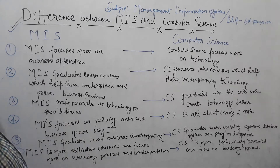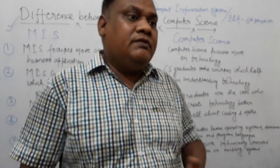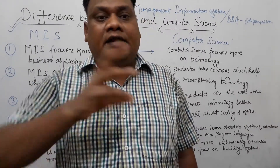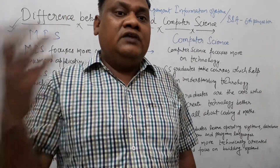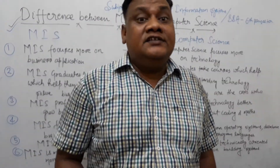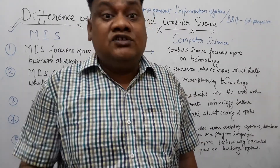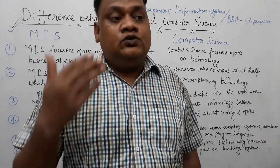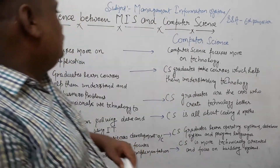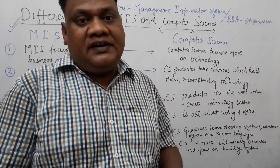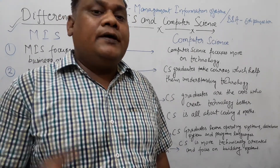In MIS, we have information which we process and remove to support the top level management. What we call DSS — the Decision Support System — is a computer-based information system which we use to make decisions. Management at the top level deals with unstructured decisions, and DSS is used technically to support those decisions.